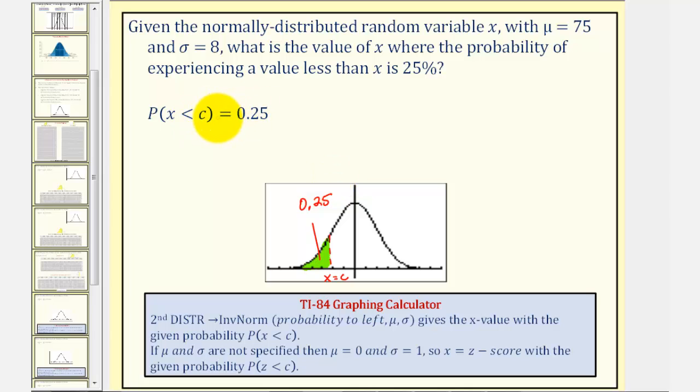We can determine the value of c using the inverse norm feature on the TI-84 graphing calculator. We enter the probability to the left, comma mu, comma sigma, and this gives the x value with the given probability of x being less than c.